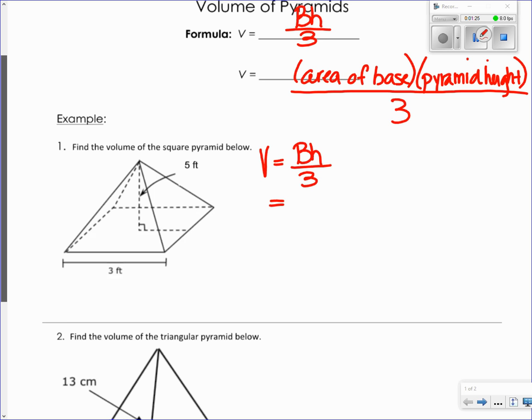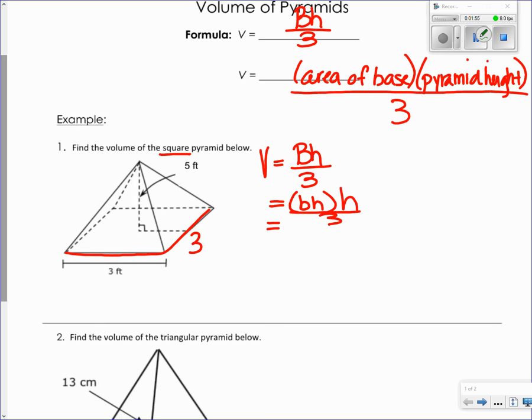First, I need to figure out what shape my base is. It says a square, so I know it's going to be three by three. So area of the base of a square is base times height, and then times the overall pyramid height. I try to make my second H a little bit bigger just so that kind of stands out, and I know that that's the pyramid height and not a height of any of my sides.